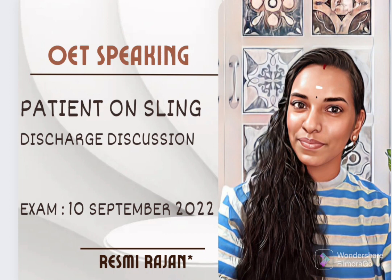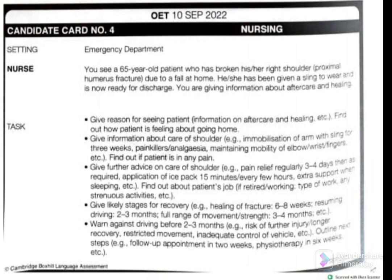You see a 65-year-old patient who has broken her right shoulder — there is a proximal humerus fracture due to a fall at home. She came to the emergency department complaining of pain. She has been given a sling and is now ready for discharge. You are giving information about aftercare and the healing process.